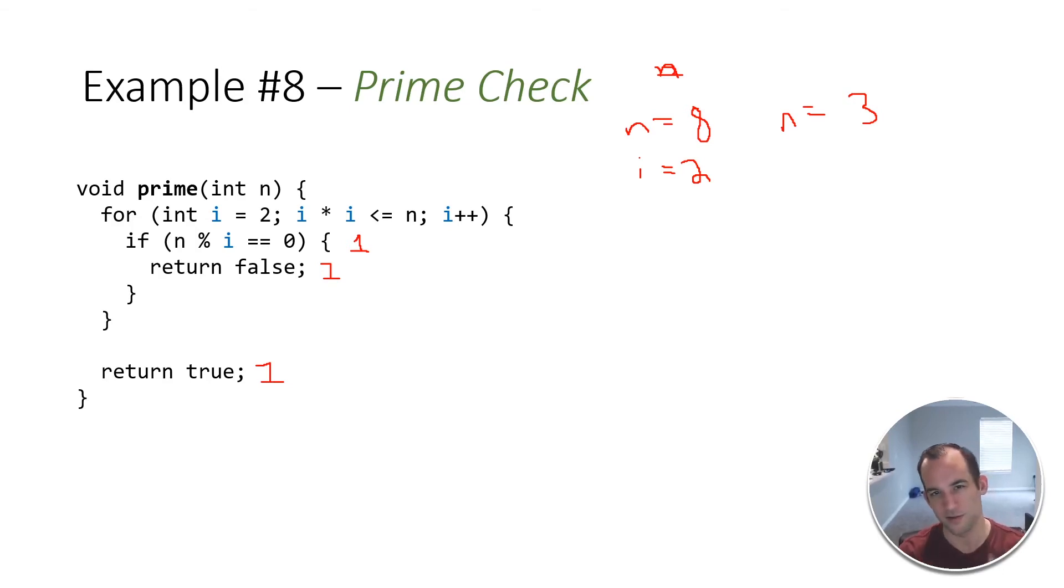Now remember again, I said this is going to be a little tricky. I'm not trying to trick you, but just make sure you're thinking, all right? So we have int i equals 2, i times i less than equal to n, i plus plus. I'll let you know ahead of time, this is not big O of n. I hope I didn't disappoint you too much. This is not big O of n.